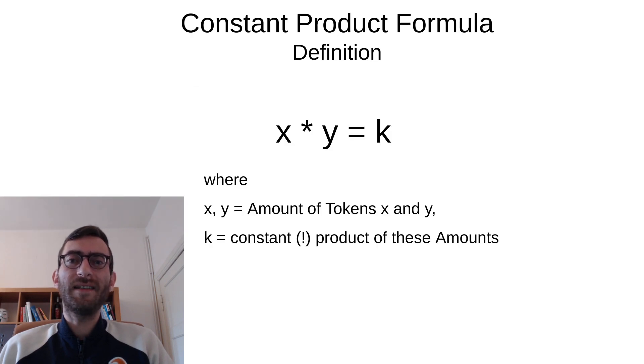But let's get to the mathematical meat. This is the constant product formula. It's not a complicated formula at its core. X times Y equals K, where X and Y are simply the amount of the two tokens that we have in our liquidity pool. And K, well, it's the product of the amounts and that is to stay constant. And this gives us a certain behavior of these pools.